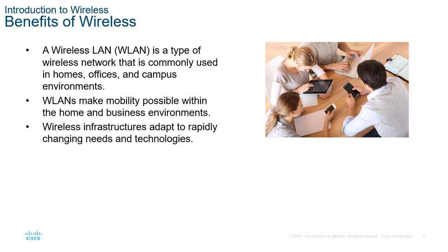First is an intro to wireless LANs. Typically a wireless LAN is denoted as a WLAN. This is basically a type of network that uses wireless as the physical media. Even though you don't touch the wireless signals, it's still classified as one of those media types. Wireless allows for the ability to be mobile — you're no longer tied to a specific infrastructure, making it more versatile for laptops, tablets, and other devices.